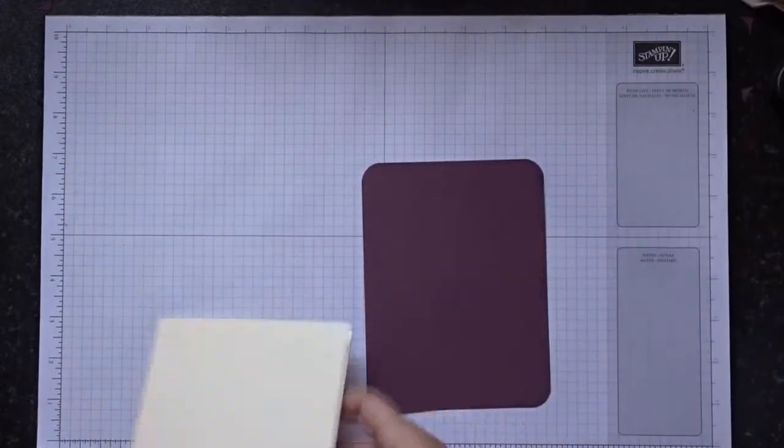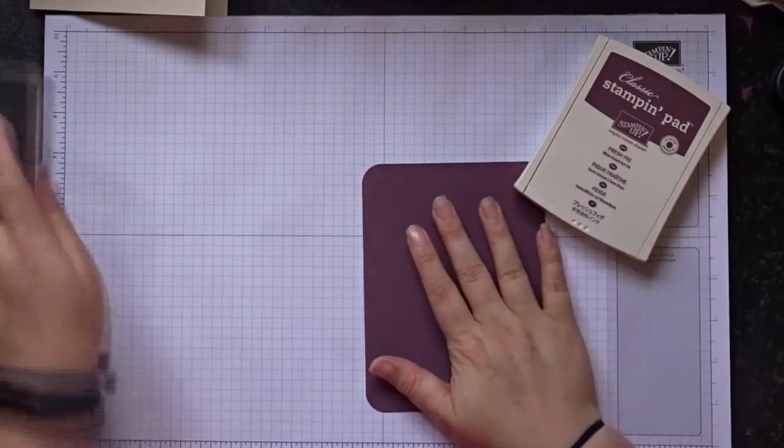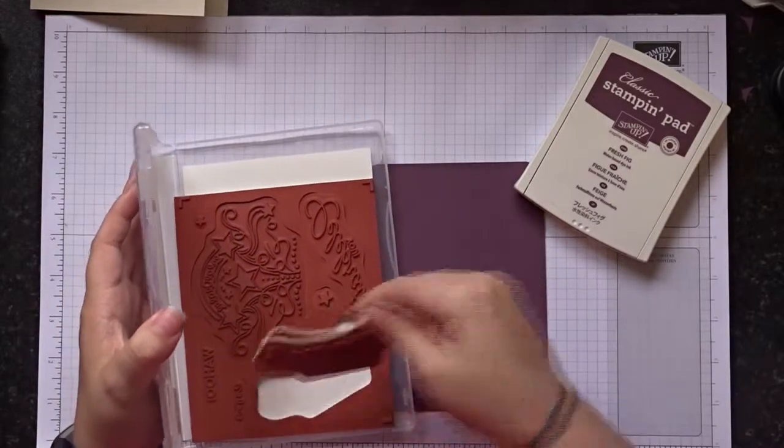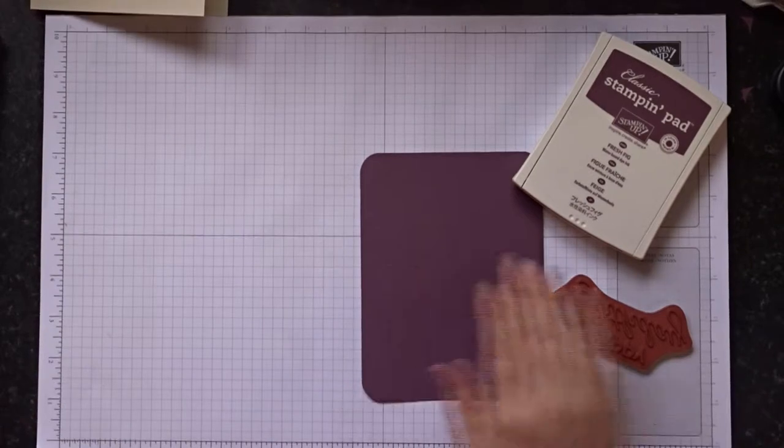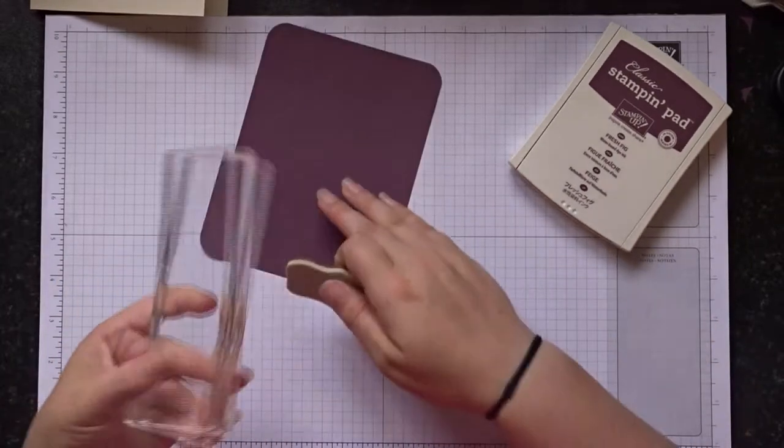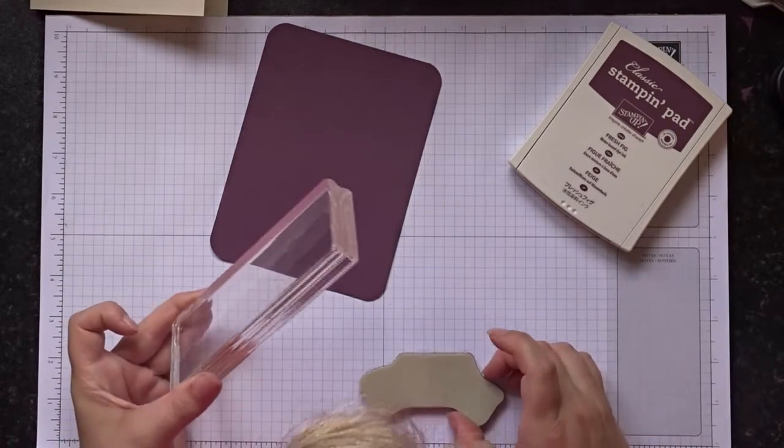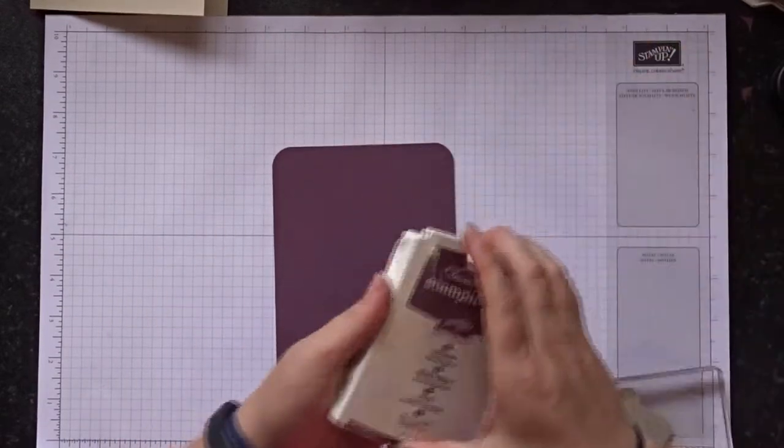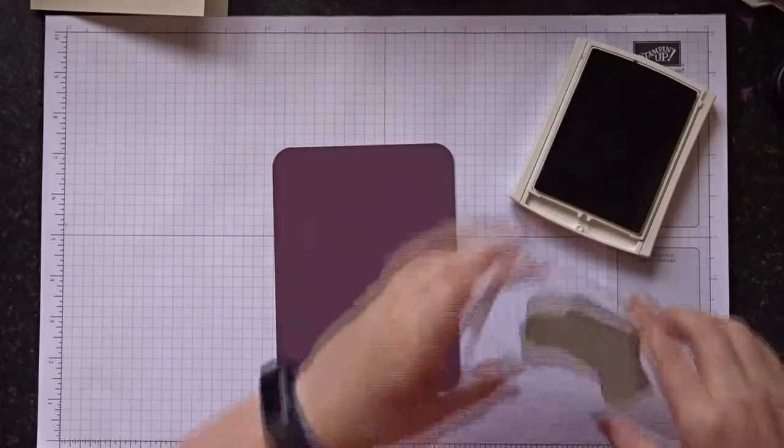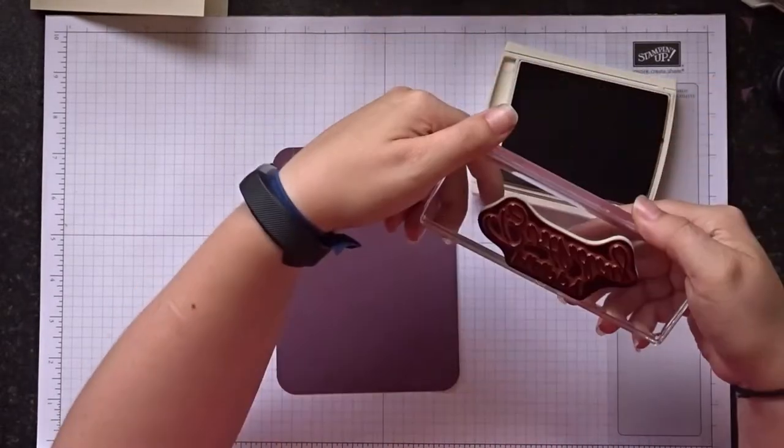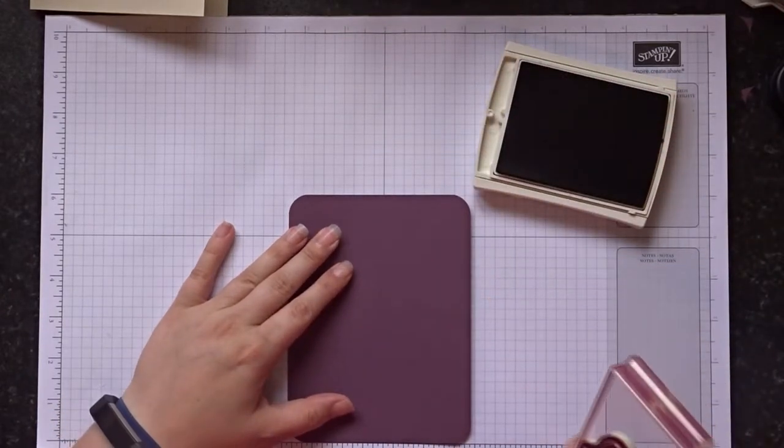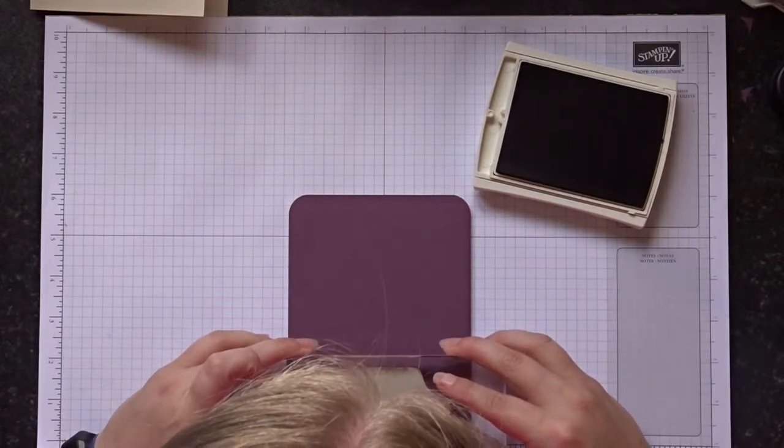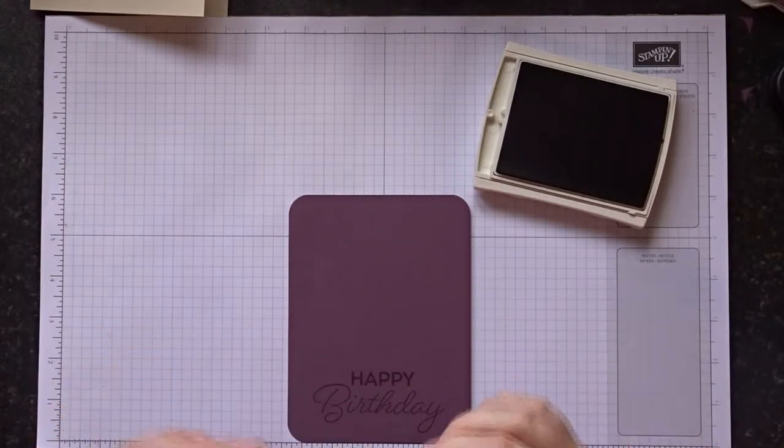Now I think we'll do the stamping first so we'll get that out the way. I'm going to use Fresh Fig so I'm doing the same colour on colour, and I'm using the Birthday Blast Happy Birthday. I have ordered one of the new stamp sets with Happy Birthday but it's not arrived yet so I'll just use this one for now. And I'm going to be using my acrylic block. So I'm just going to line that up, ink it up and stamp at the bottom. And there we go.